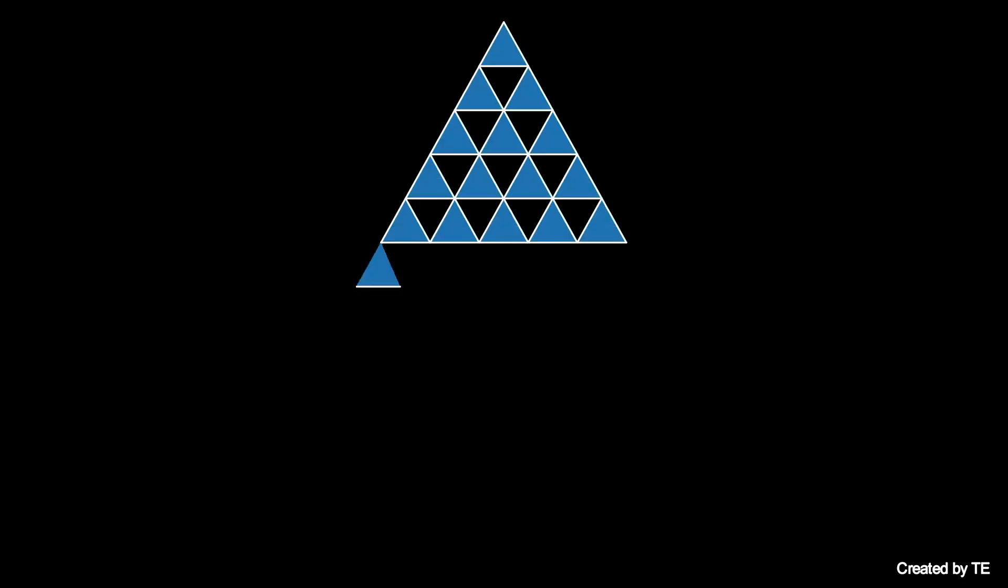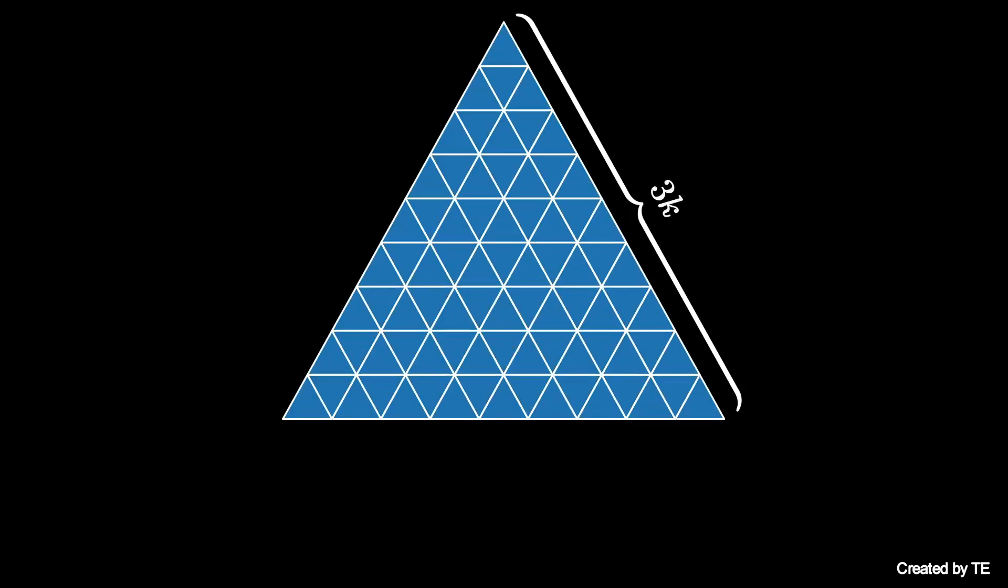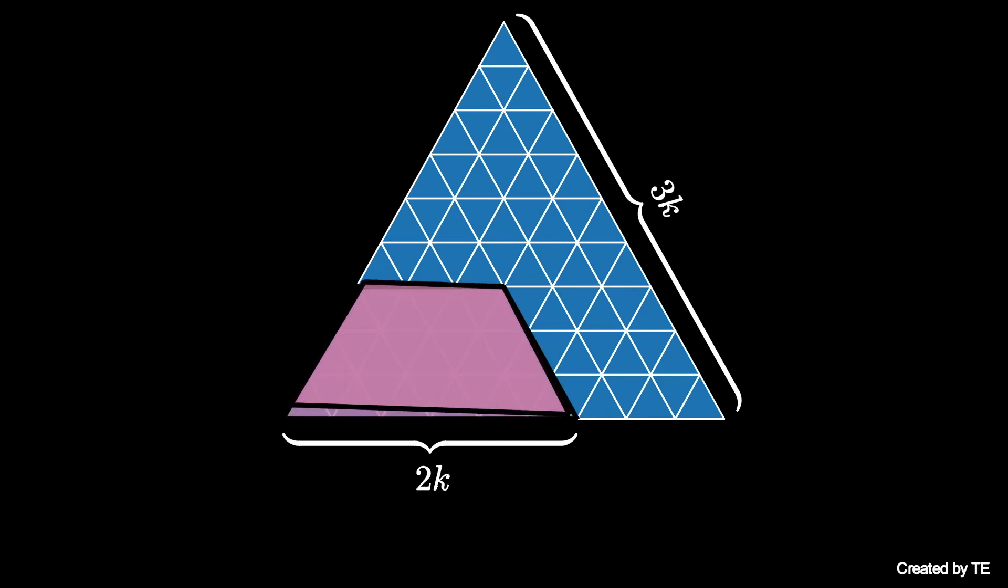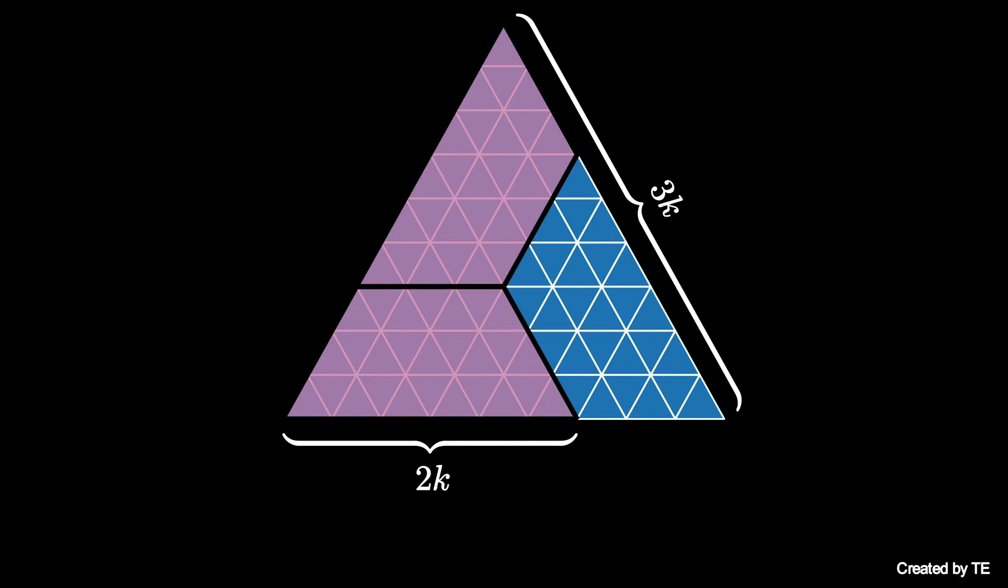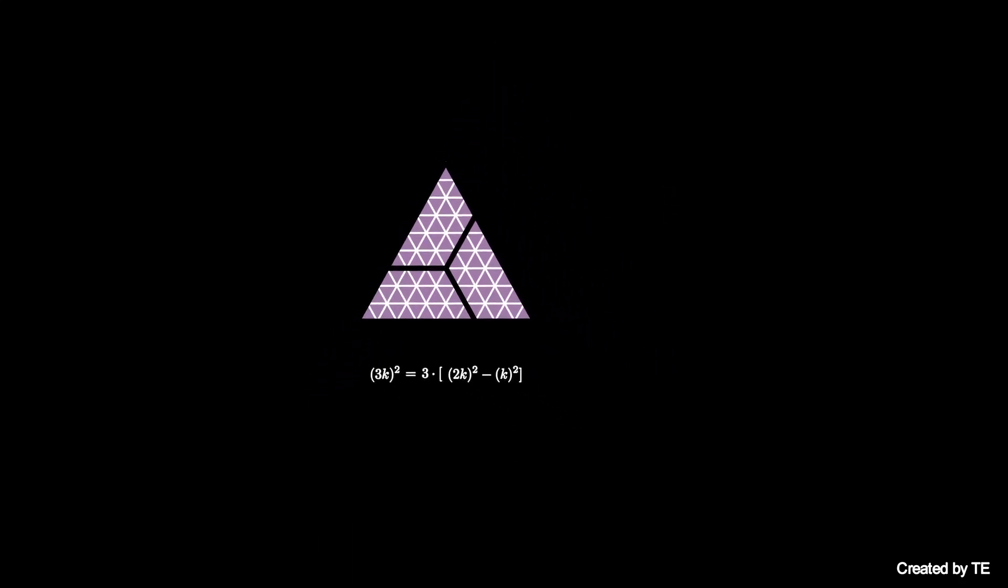Starting with this square of a multiple of 3, let's say 3k, we can consider the trapezoid tile in the lower left with bases 2k and k. Three copies of this trapezoid tile can be used to cover the entire triangle in this way. So that (3k)² is 3 times the size of the trapezoid, but the trapezoid is a difference of two triangular tilings, so it contains (2k)² minus k² triangles.